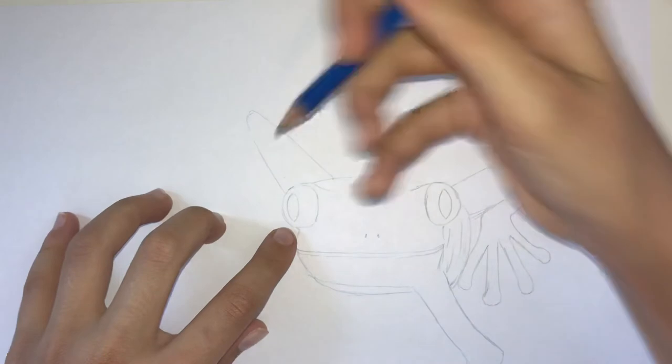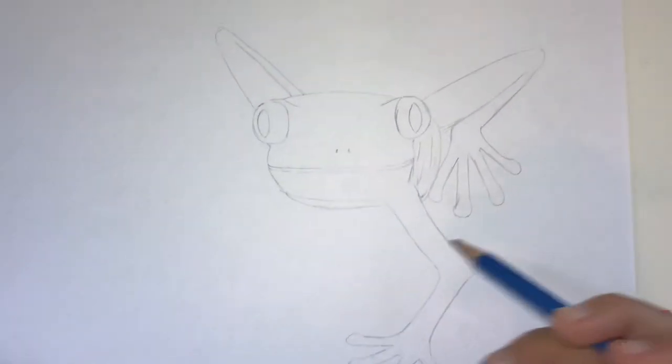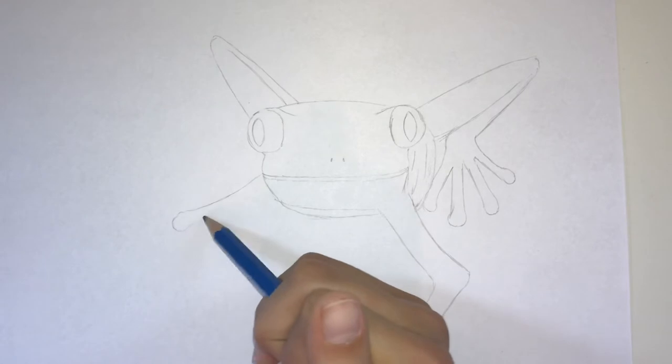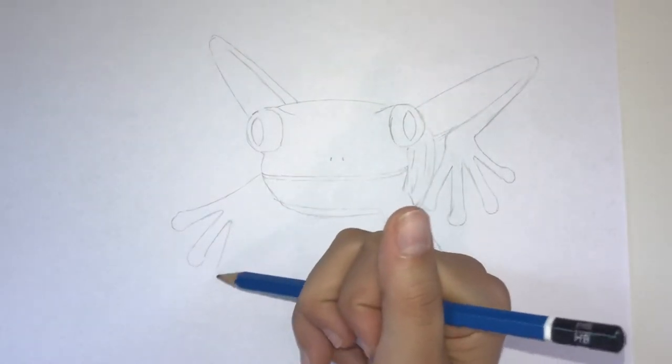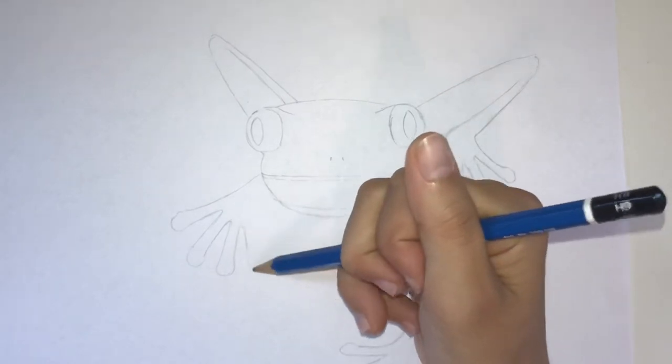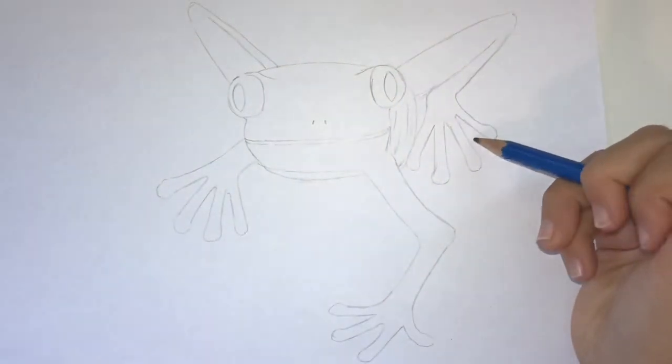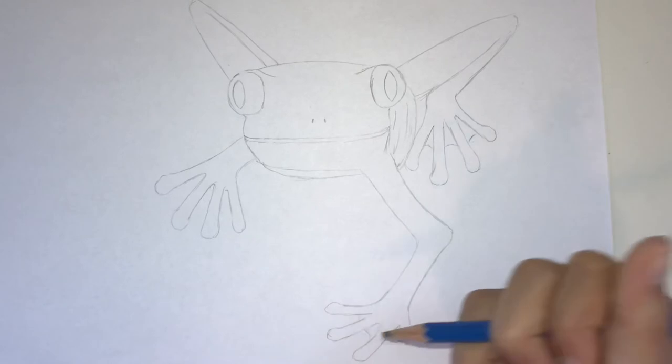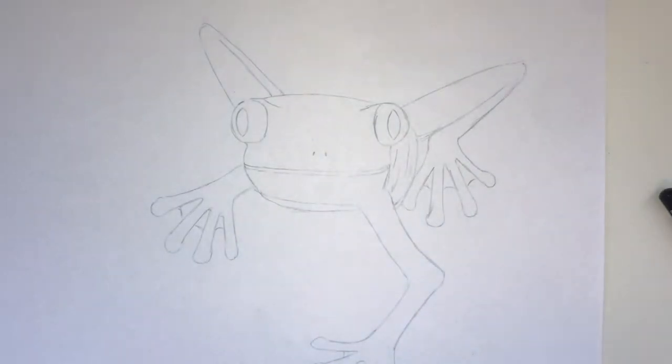Oops there we go, sorry about that. The front arm. Oh and don't forget to draw the webs in between the toes. I'm gonna make this one a little bit different. And there we go a beautiful tree frog, now we will move on to the tracing.